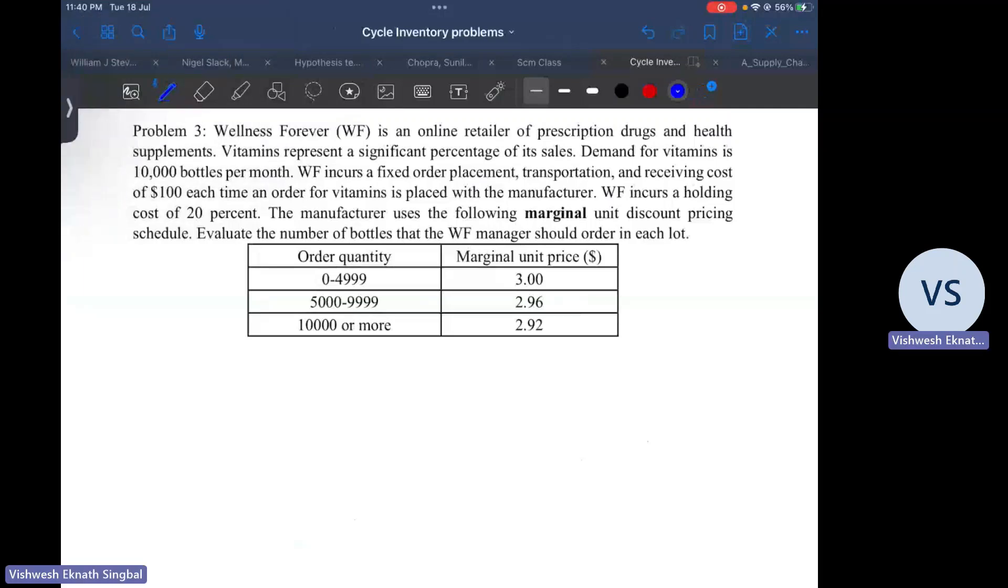Hello everyone, so now we'll move on to marginal unit quantity discount problems. You've already seen how to solve or decide upon the optimal lot size with all unit quantity discount. Let's first go through the problem - it's the same one, only changes that it's marginal unit quantity discount pricing now instead of all unit quantity.